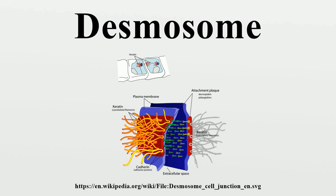Arrhythmogenic right ventricular cardiomyopathy. Mutations within the desmosome are the main cause of arrhythmogenic right ventricular cardiomyopathy. It is a life-threatening disease with the molecular underpinnings being the desmosomal constituents plakophilin-2, desmoplakin, desmoglein-2, desmocollin-2, and plakoglobin. It often afflicts young male athletes.